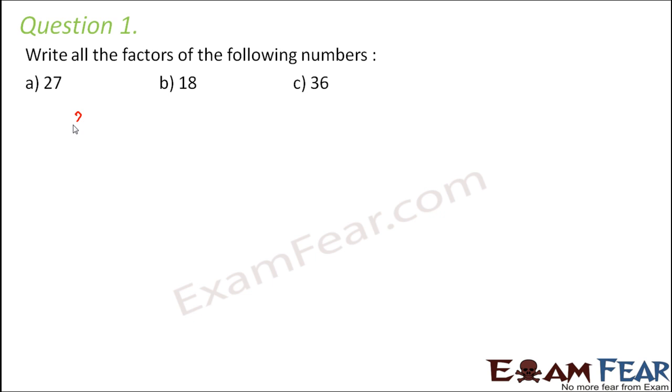So let us start with 27. How do we write factors of a number? We start from 1 and we just keep checking that is there any number which can divide 27 completely. So let us start with 1. Yes, 1 into 27, we can write it like this. 1 is a factor of every number we know. What about 2? 2 will not divide 27. How about 3? Yes, 3 nines are 27.